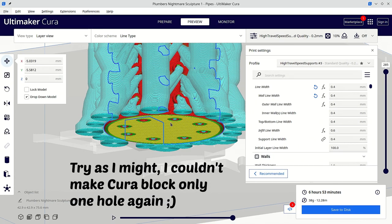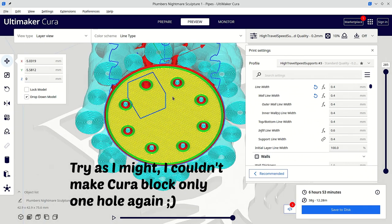The blocked bottom tube should be easier to clean with the support blocker. Sounds logical, right?